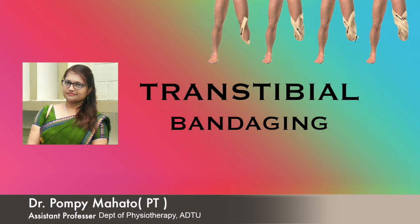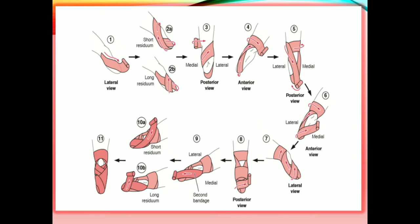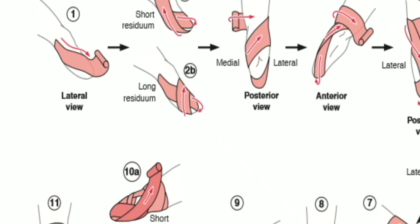Hello class, on today's lecture we are going to learn about transtibial bandaging. A sequential pattern is shown here, so we learn each stage one by one. The main aim is to bring out the figure-of-eight pattern. On the posterior side we go for semi-circular turns and on the anterior aspect we go for diagonal turns to form the figure-of-eight pattern. We start from the proximal part of the residual limb, go to distal, and again back to proximal.